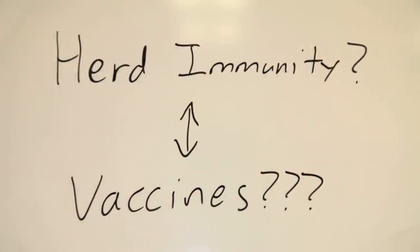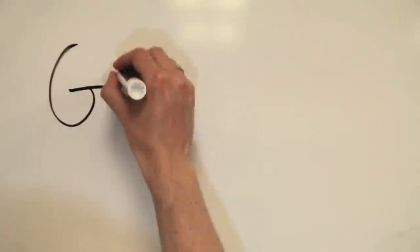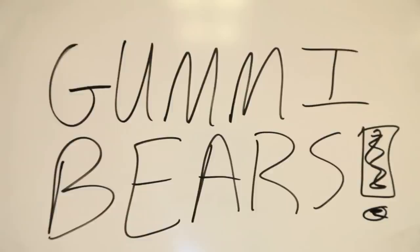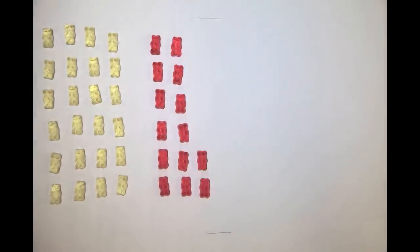But what is herd immunity, and how do vaccines figure into it? Let's answer these questions using gummy bears. The very simplest epidemiological model, the SIR model, makes use of three categories.